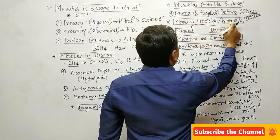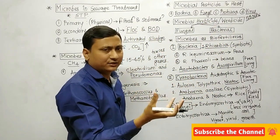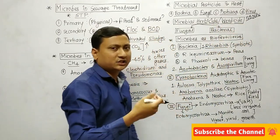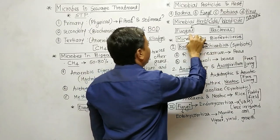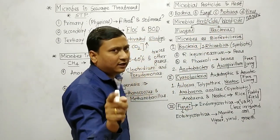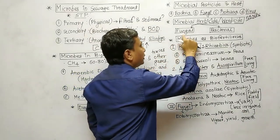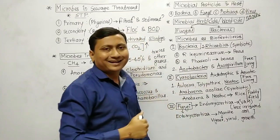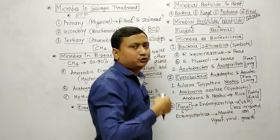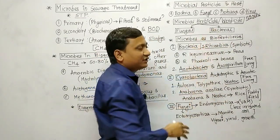The next topic is microbial herbicides and weedicides. Herbicide is used to destroy unnecessary grass and weeds. There are two categories. First, fungal herbicides — examples are Phytophthora palmivora, Alternaria crassa, and Fusarium species. Second, bacterial herbicides — examples are Pseudomonas, Xanthomonas, and Agrobacterium species. Learn these charts properly, as many questions can be expected.